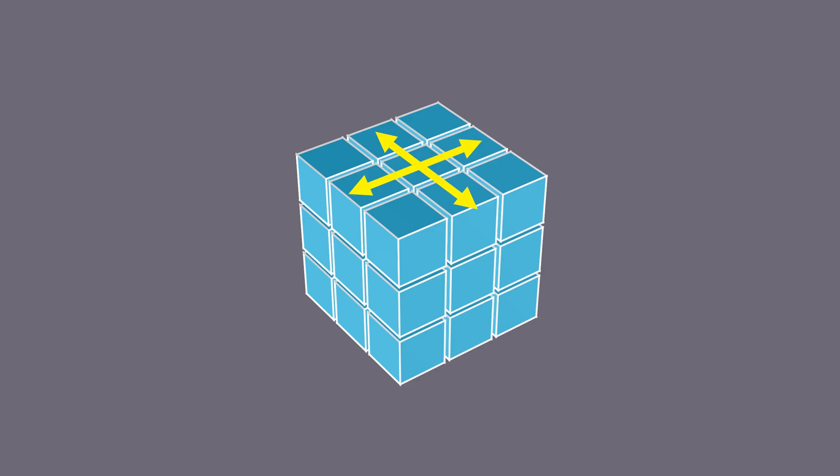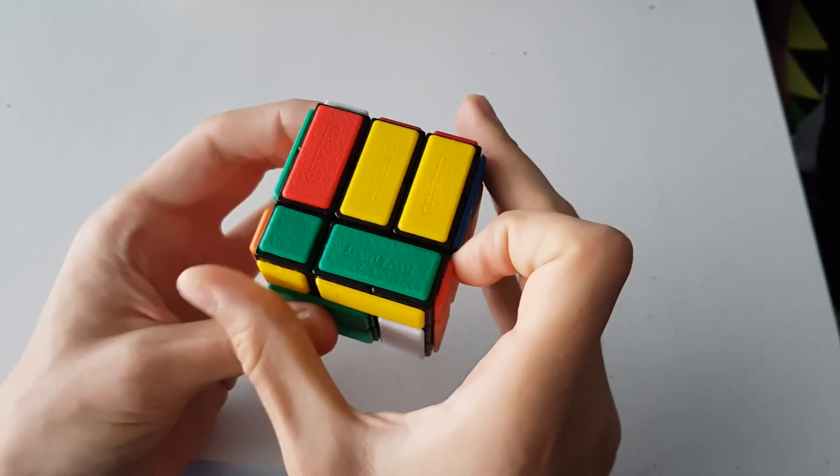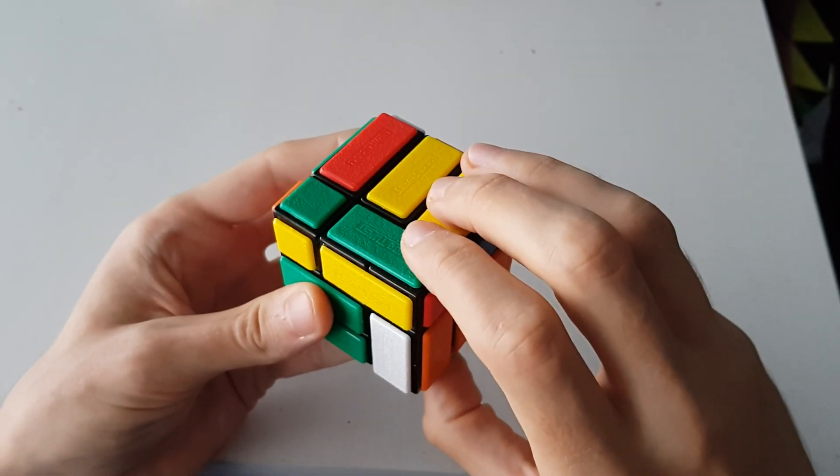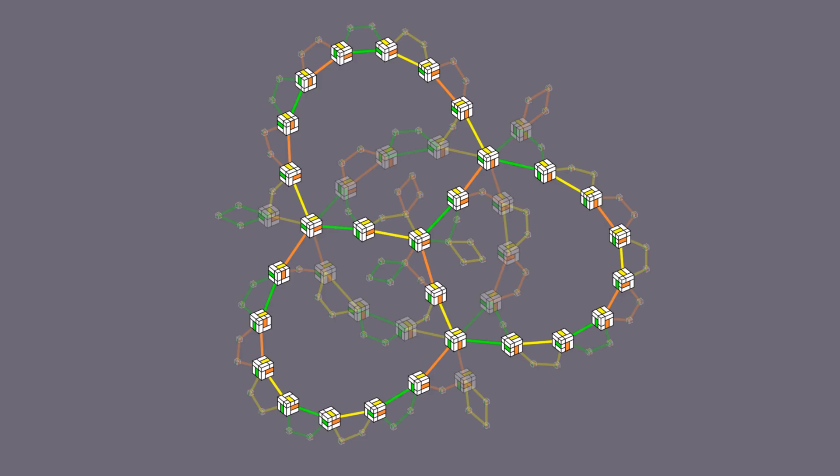The key for group-based methods, however, is that you need to be able to turn any face at any time. This is just not true for bandage cubes. But if you collect loops around a shape in the graph as we did, these do work as group elements as they can always be composed.